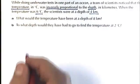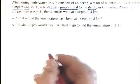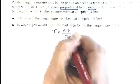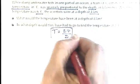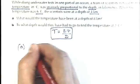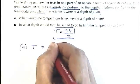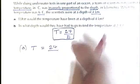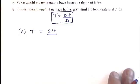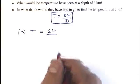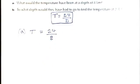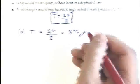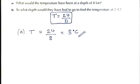So part A, what would the temperature be at a depth of 8 kilometers? Remember, I've just worked out that the temperature is equal to 24 divided by the depth. So for part A, the temperature is 24 divided by the depth, which is 8 kilometers. Let's just move that up a bit so we're not distracted. What would the temperature have been at a depth of 8 kilometers? So I'm replacing that D with an 8 in my formula, and that gives me 3 degrees centigrade. 24 divided by 8 makes 3.